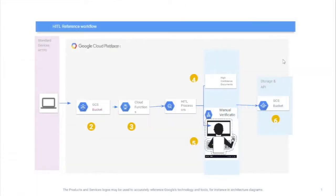Good afternoon. Today we are going to discuss the Human-in-the-Loop feature that has been enabled as part of Google Document AI processing. Document AI is a solution that is used to process different unstructured data, such as documents, forms, and images, making data easier to understand and analyze for further processes.